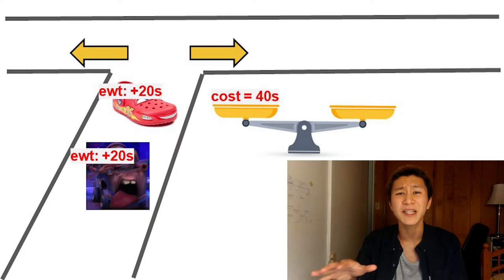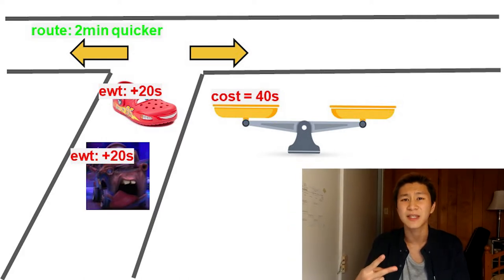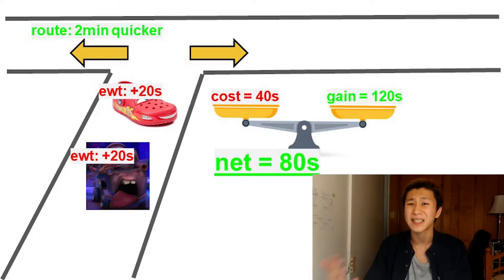Thus, I'm wasting 40 seconds total in that parking lot. However, I'm still saving two minutes with the left route, netting an 80-second profit. So, the rational choice is still turn left.